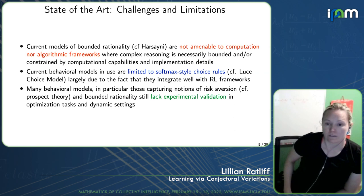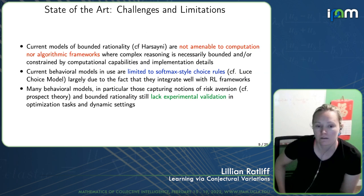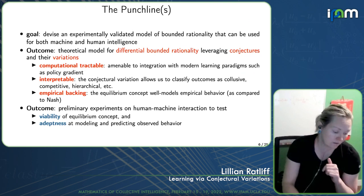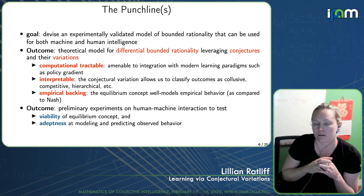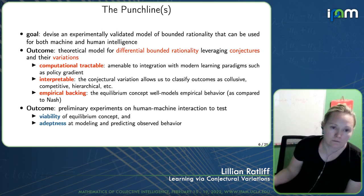Many behavioral models that are good at capturing things like risk — say from prospect theory or other bounded rationality models — still lack experimental validation, in particular for optimization tasks in dynamic settings. With these points in mind, our goal is to come up with an experimentally validated model for bounded rationality that can be integrated with existing learning techniques, in particular for reinforcement learning when you have a human in the loop.